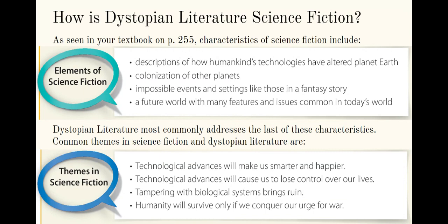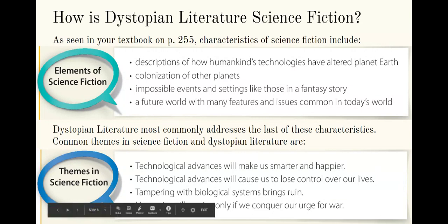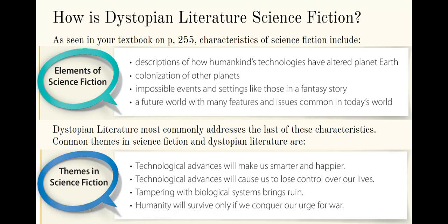So how is dystopian literature science fiction? These are some excerpts from our textbook about science fiction. Characteristics of science fiction can include descriptions of how humankind's technologies have altered planet Earth, colonization of other planets, impossible events and settings like those in a fantasy story, and a future world with many features and issues common in today's world. Dystopian literature most commonly addresses the last of those, and often shows a future world with features and issues common in today's world. Common themes include: technological advances will make us smarter and happier, or conversely, technological advances will cause us to lose control over our lives; tampering with biological systems brings ruin — why mess with nature; or humanity will survive only if we conquer our urge for war.